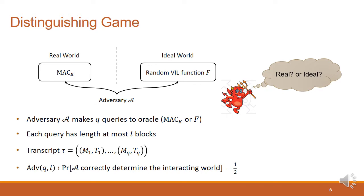To precisely formulate the PRF security of a function, we introduce the distinguishing game. In this game, the adversary is interacting either with the real world and the ideal world. The real world comprises the MAC function, while the ideal world comprises a random variable input length function named F. The adversary tries to distinguish two worlds by making Q oracle queries with length at most L blocks. At the end of the game, the adversary should determine the interacting world from the transcript, which is the record of queries and the answers. The distinguishing advantage of the adversary is defined as the probability of correctly determining the interacting world minus 1 over 2. The 1 over 2 comes from the probability of winning by simple random guessing.